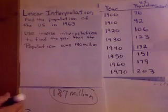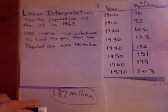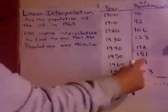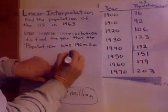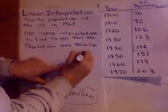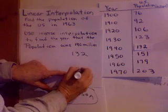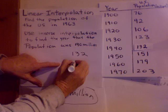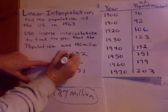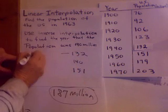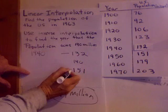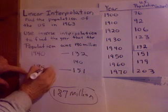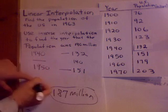Inverse interpolation. Find the year that the population was 140 million. So I look here and where is 140 million? Well, it's between 132 million and 151 million. And they want me to find 140. So again, 132 the year was 1940. 151 the year was 1950. So I need to find this missing year.